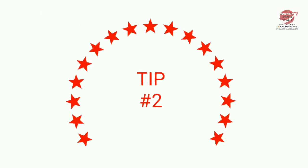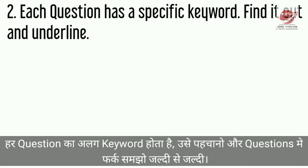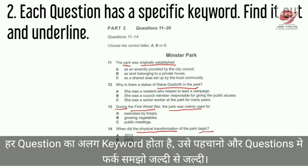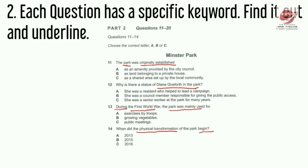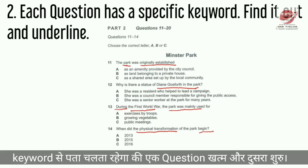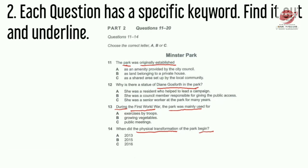Moving further to the second point: every question has a specific keyword which you need to find out as early as possible. This point is the most important of all points, because if the keyword is understood, you will yourself be able to understand which question is being spoken. For example, question number one is over, two is starting. If question number three is over then question number four is starting. And if anyhow you have missed one or two questions, please don't panic. Move to the next question, be ready with your keyword and listen to the recording carefully.